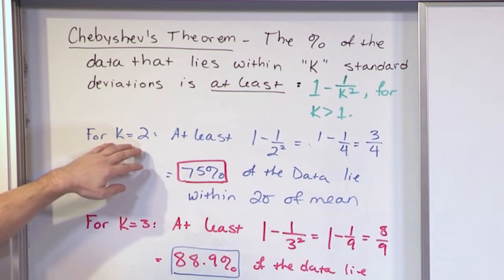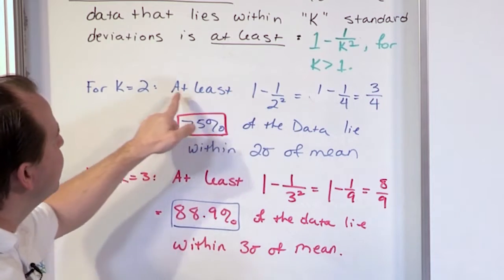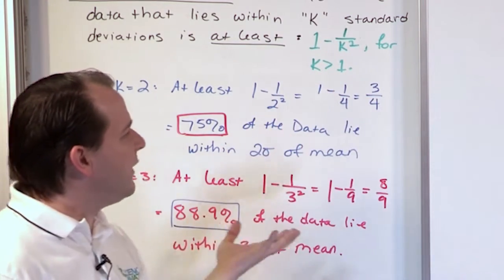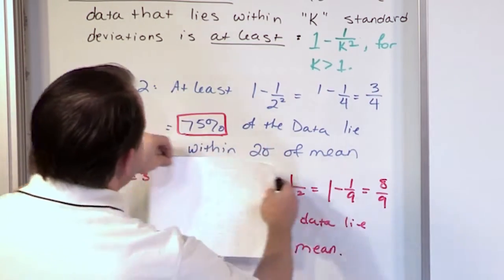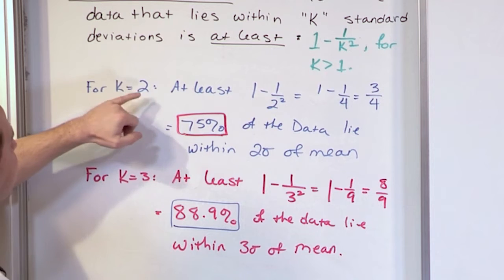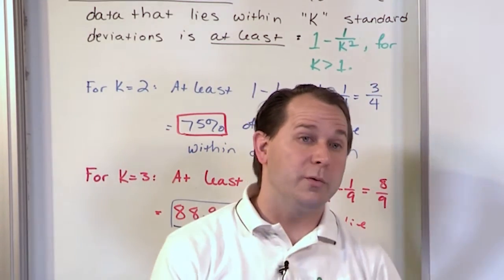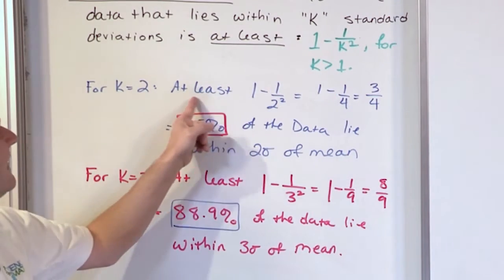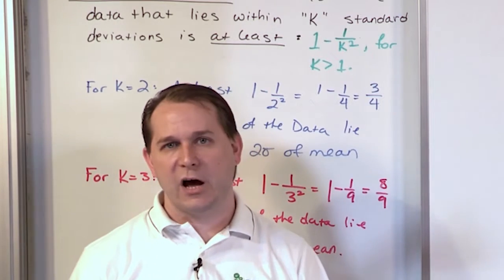To take an example, when k equals 2 — meaning I want to find what percentage of the data lies within two standard deviations — it's at least 1 minus 1 over 2 squared, which is 1 minus 1 fourth, which is 3 fourths, or 75%. So if your data is not bell-shaped and you're looking at plus or minus two standard deviations around the mean, then at least 75% of the data lies within two standard deviations. For the bell-shaped distribution it was 95%, but Chebyshev's theorem tells us at least 75% for any other distribution.